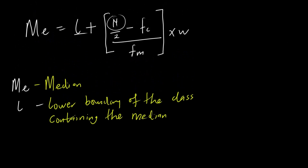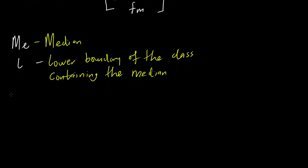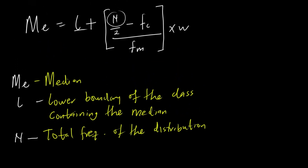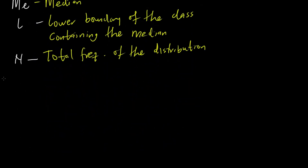Going back to the formula, we also have N, which is simply the total frequency of our distribution. We also have another term F subscript C, which means the cumulative frequency before the median class — that is, the cumulative frequency of the class before the median class.